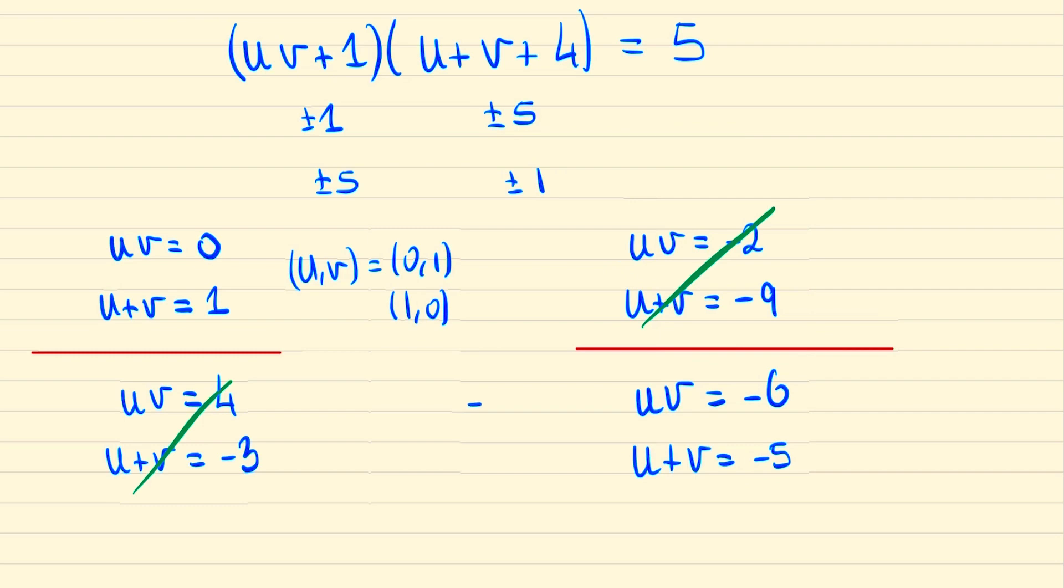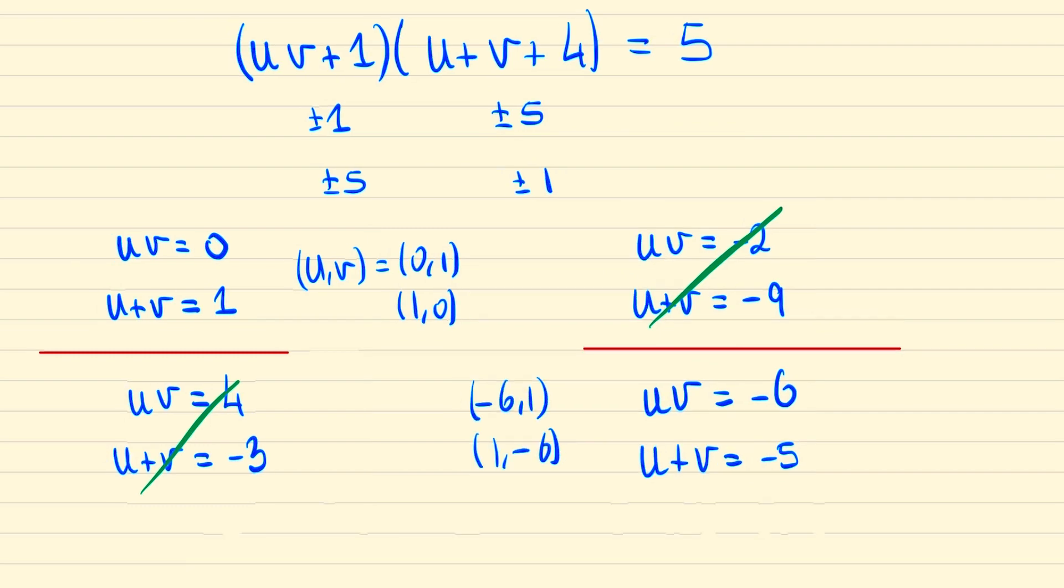And now recalling that we said x was u plus one and y was v plus one, then we have four possibilities for x y, namely these ones written down.